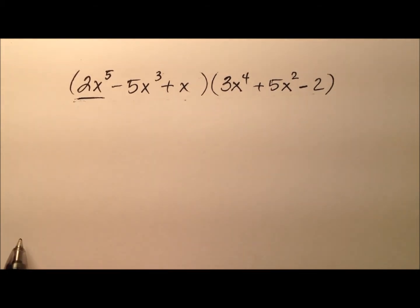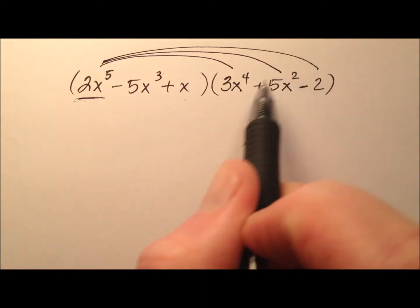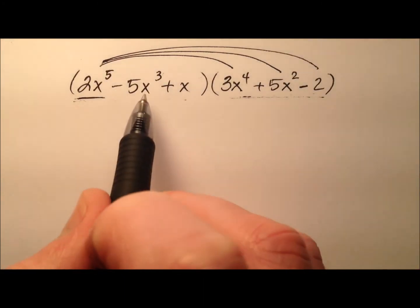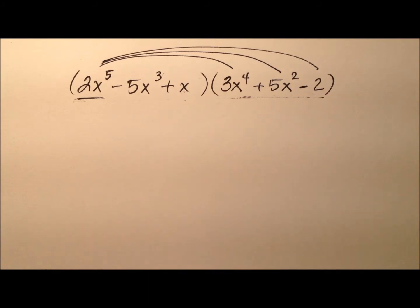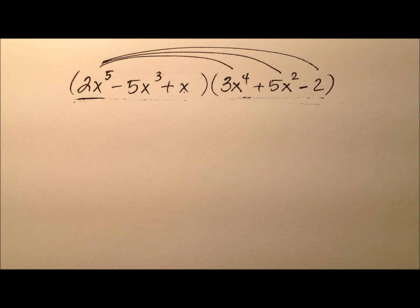So we'll take this first term, 2x to the fifth, and we'll do a series of distributions. We'll distribute them through this trinomial, and then likewise, we'll take this term and then this term, and so we'll have three terms times three terms. So we'll have nine terms at the end, and then we'll just combine whatever terms happen to be like terms.